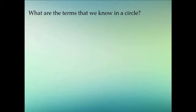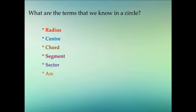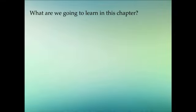The terms we know about a circle from earlier classes include: radius, center, chord, segment, sector, and arc. When we talk about segment, we have major segment and minor segment; similarly, sectors have major and minor sectors, and arcs have major and minor arcs. All these terms were discussed in ninth standard. Now let's see what new topics we are going to learn about circles in this chapter.